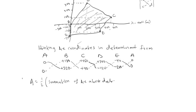So here we have area equal to one-half times the bracket. The first term involving point A coordinates (0, 0) gives zero.